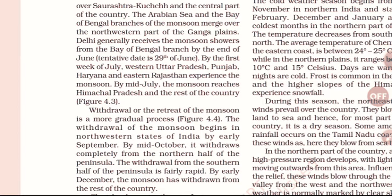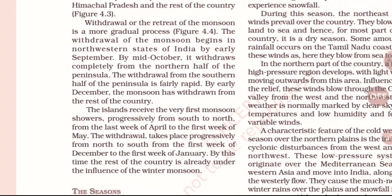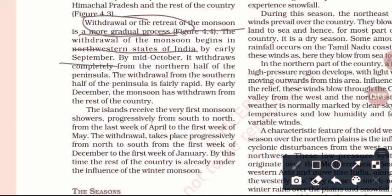When we talk about withdrawal — withdrawal means retreat. The monsoon retreat is more gradual and slow compared to its onset. Withdrawal of the monsoon begins in the north-western states by early September.